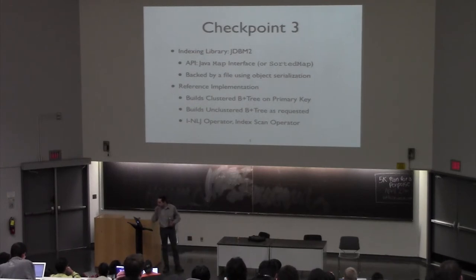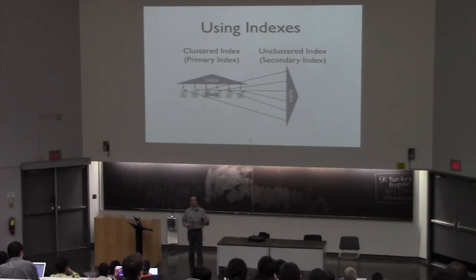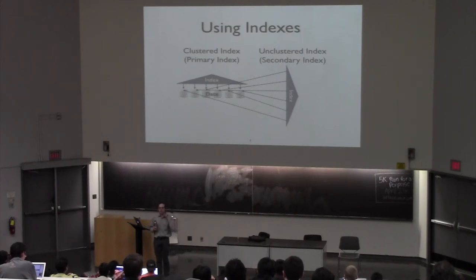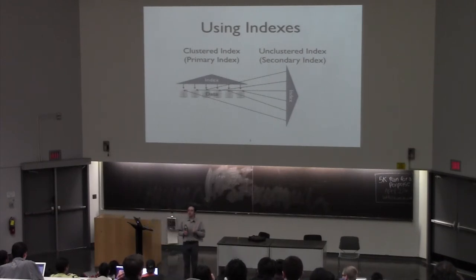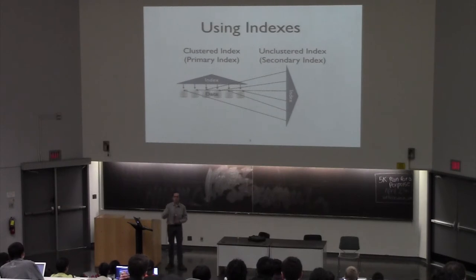A couple of brief slides to review a couple of definitions. There are two types of indexes: clustered indexes and unclustered indexes. Unclustered indexes have pointers to the clustered index — the clustered index acts as the primary store for the data, and unclustered indexes act as a secondary way of accessing the data.